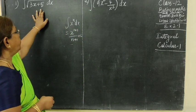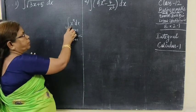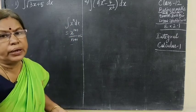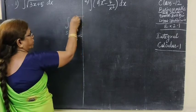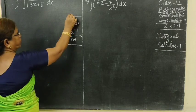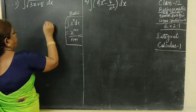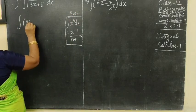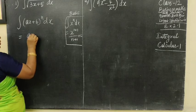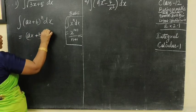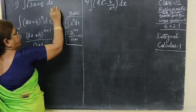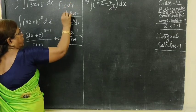We integrate root of (3x + 5) dx. For this we use the formula: integral of x^n dx equals x^(n+1) by (n+1). But here it is ax + b type, so we use the formula: integral of (ax + b)^n dx equals (ax + b)^(n+1) by (n+1) plus c.